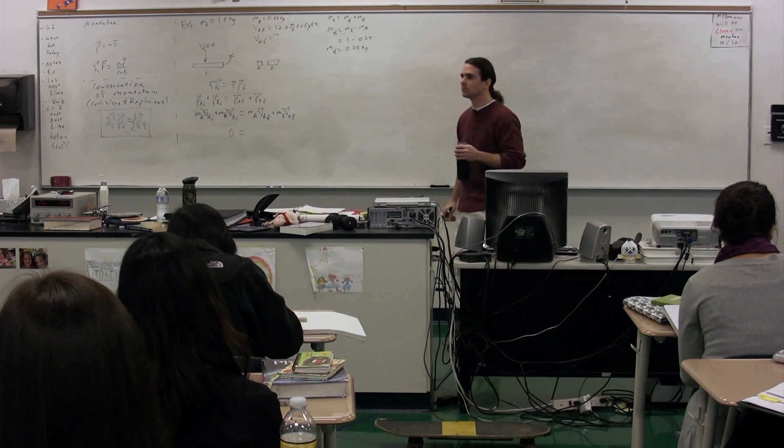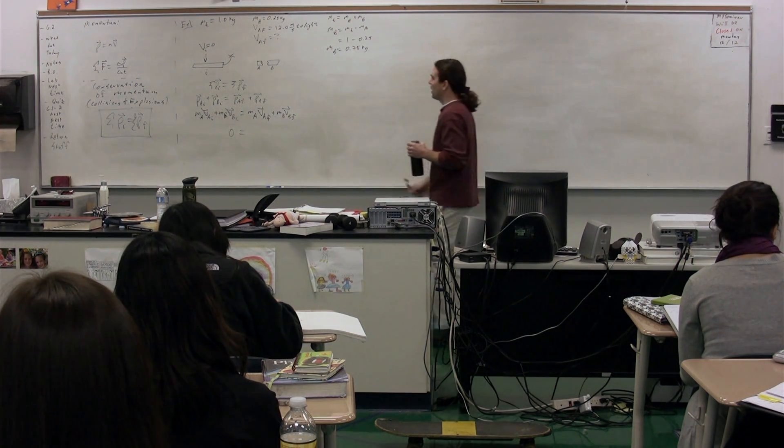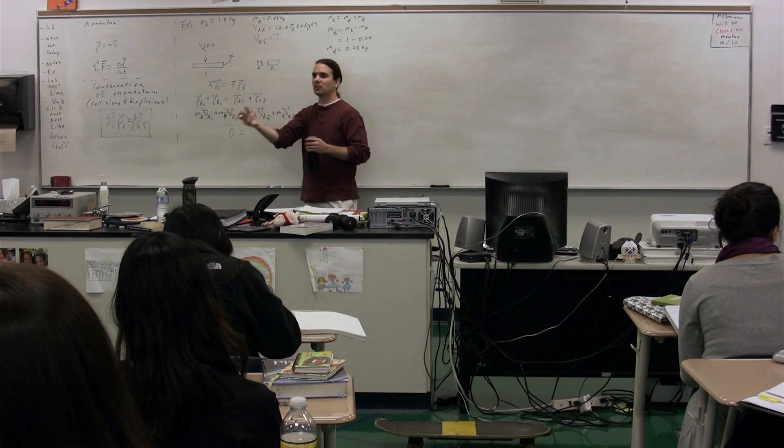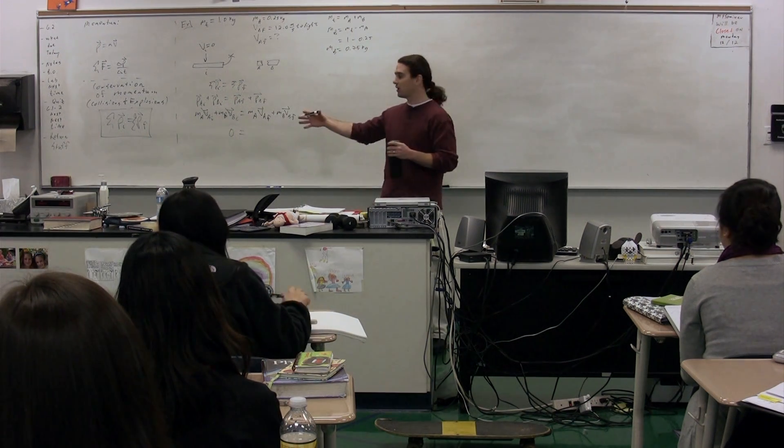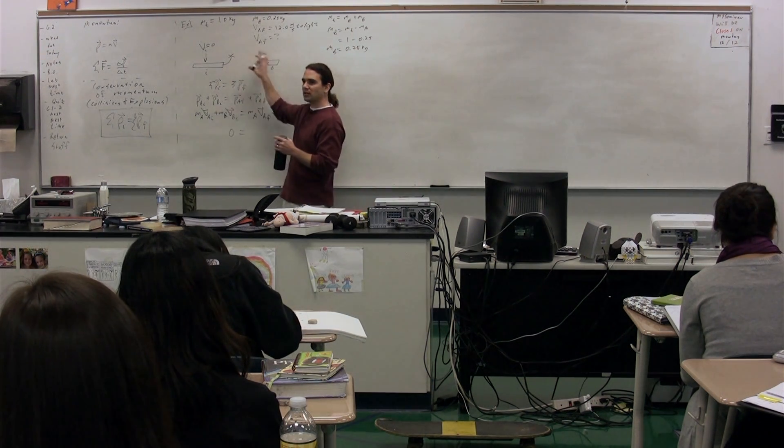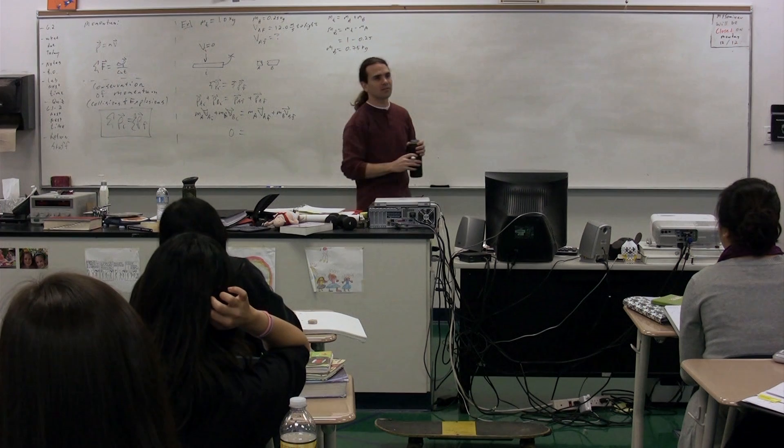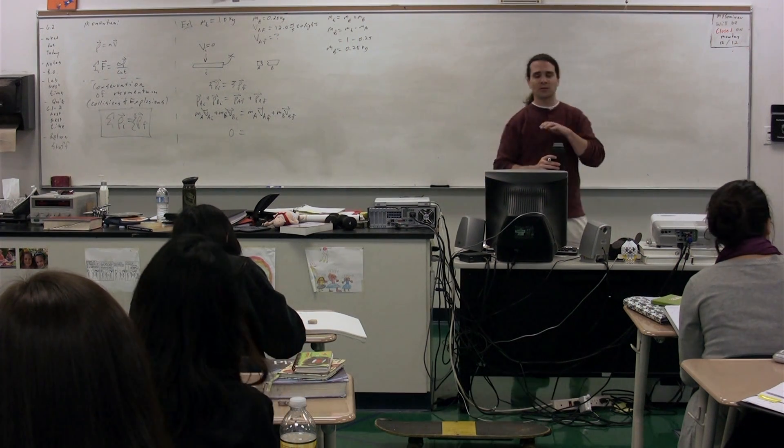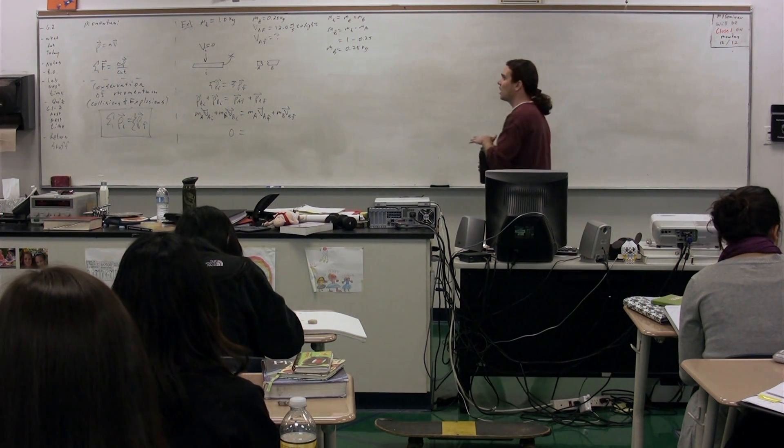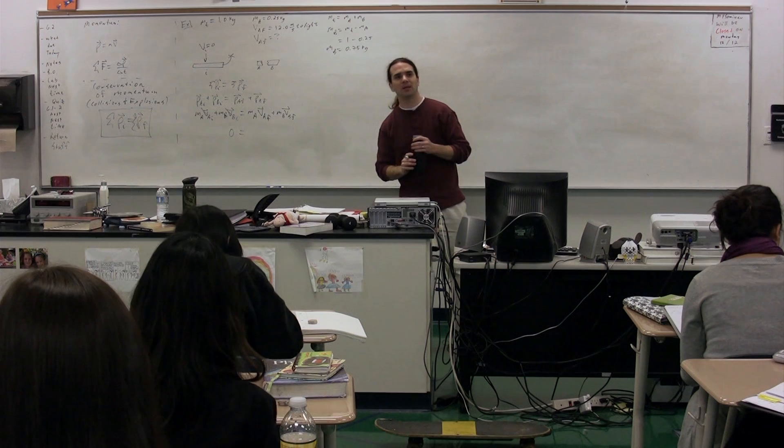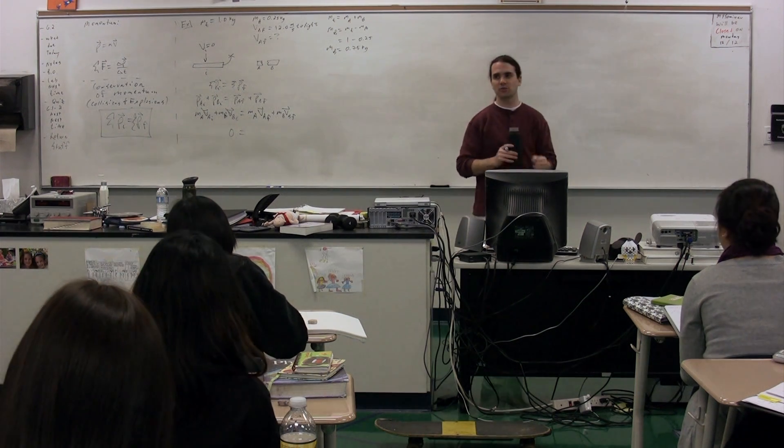If B is moving to the right, A should be moving to the left, which is negative. Yes, I agree we can get there from equations, but I want us to intuit this. We should also be able to intuit the magnitude of velocity A versus B, considering the masses of the two objects.